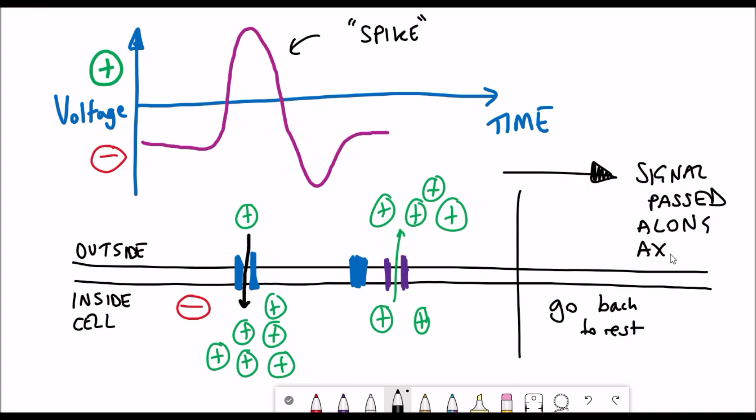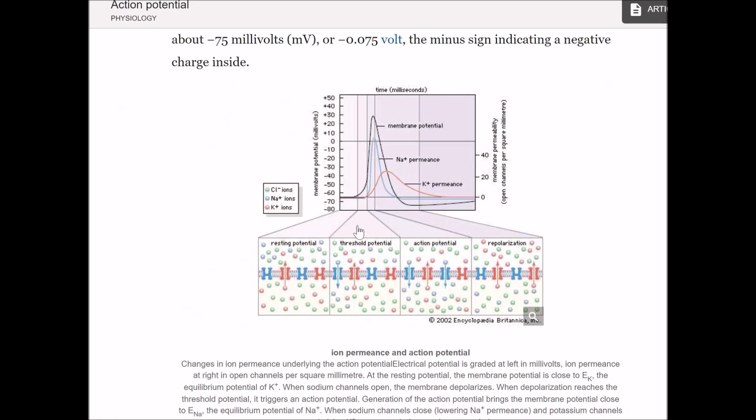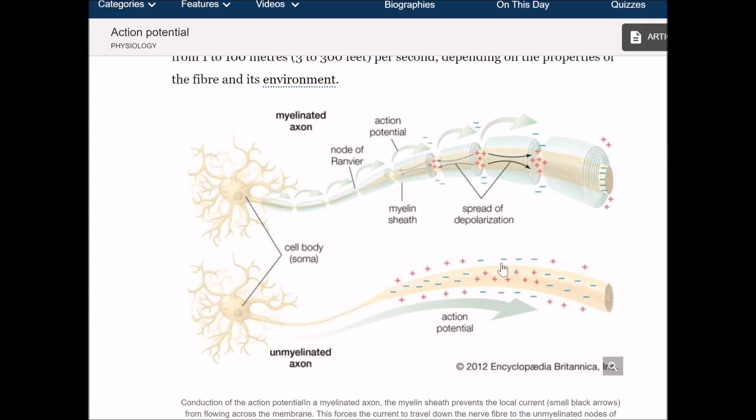The point to take from this is that there's electrical changes across the membrane of the neuron due to these movements of ions and these are what can be detected and recorded to understand which neurons are active.